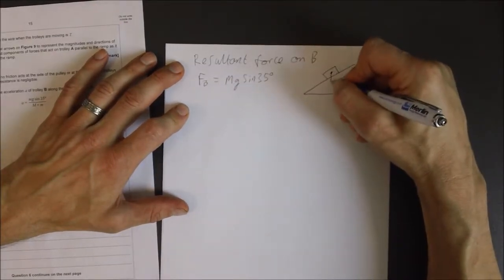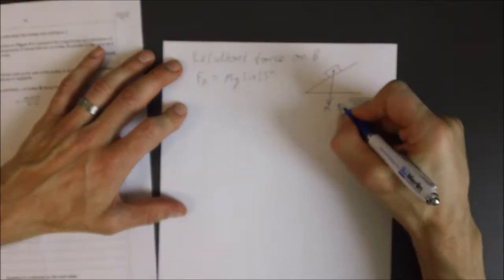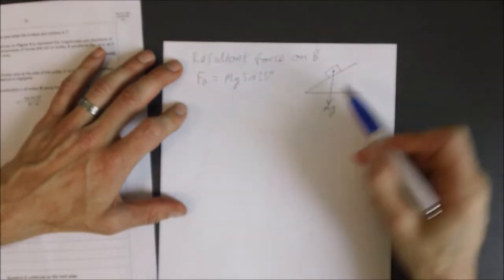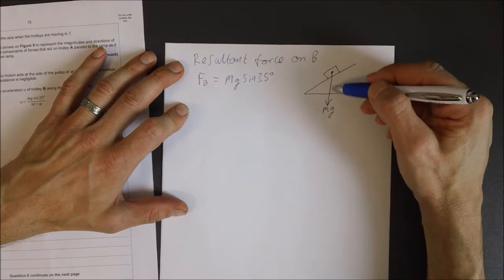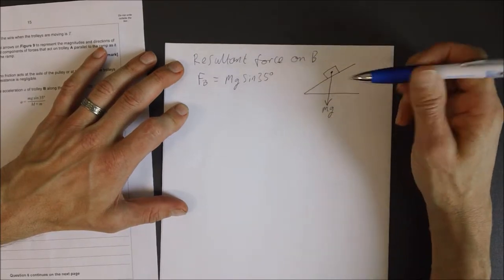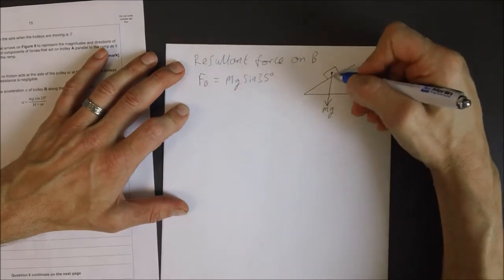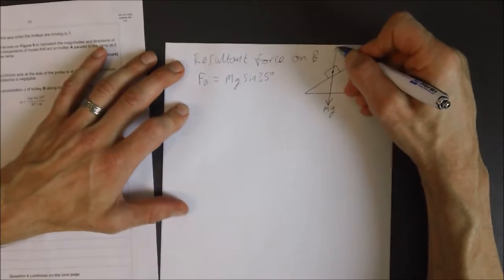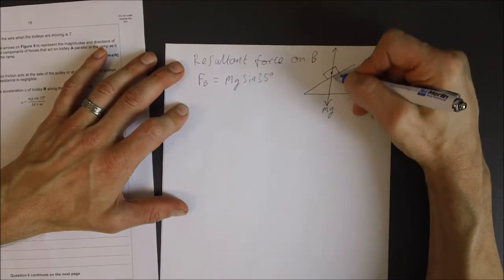Now, if you draw a line straight down from there, that is going to equal MG. That is the weight force of the trolley. The weight force component is going to vary from a maximum MG to zero. It can never be more than MG. So here, if I know that that is going to be the maximum, then I can draw a triangle on this diagram here. And that triangle has to have that as the hypotenuse, because that's the maximum value it can ever be.